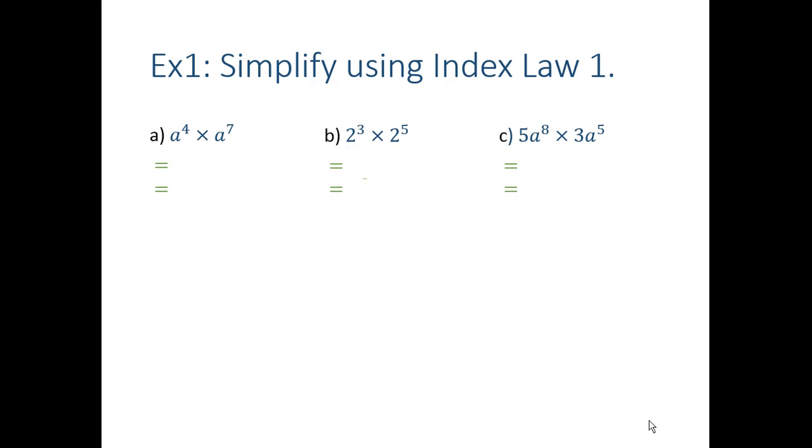So a couple of examples of that. If I've got a to the 4 times a to the 7, well that's just a to the 4 plus 7, which is of course a to the power of 11. If the base is a number, it doesn't change anything. Our base is still going to stay the exact same. So this is 2 to the 3 times 2 to the 5. Remember that's really 3 2s multiplied by 5 2s. So it's still just going to be 2 to the 3 plus 5, not 4, because it doesn't become 4s when I multiply it. That becomes 2 to the 8.